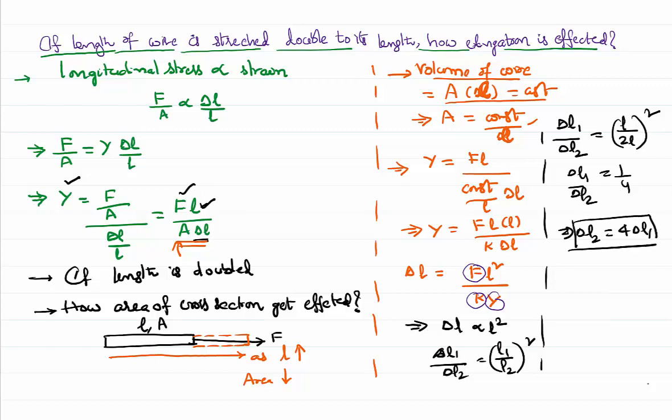What it means is, if the length is only L, if the wire expands by some X, when the length is stretched double to the length, the wire is going to expand by a value of 4X. It's not 2X, it's 4X, because we have eliminated area and written in terms of the given data of the problem, that's nothing but length.